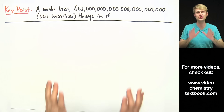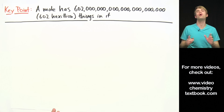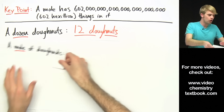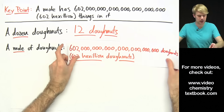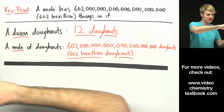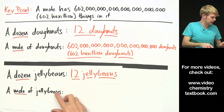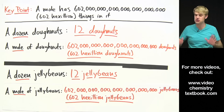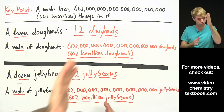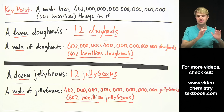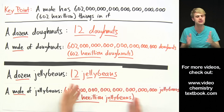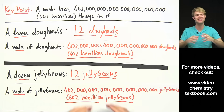There are 602 hexillion things in a mole, and just like a dozen, we can have a mole of anything. We could have a dozen donuts — which would be 12 donuts — or we could have a mole of donuts, which would be 602 hexillion donuts. A dozen jelly beans would be 12 jelly beans, and a mole of jelly beans would be 602 hexillion jelly beans. You can have a mole of donuts, jelly beans, cars, paper clips, bouncy balls — just as long as it is 602 hexillion things, you've got a mole.